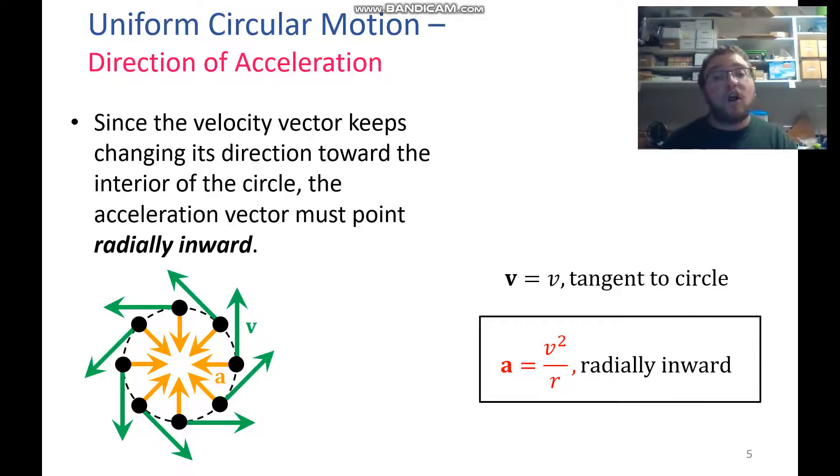So centripetal acceleration always points radially inward, so it points towards the radius into the center of the circle, and has a value of the speed squared divided by that radius.